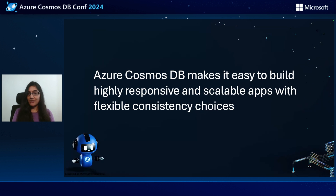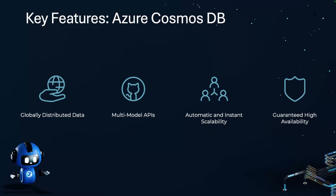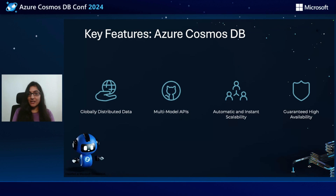Azure Cosmos DB makes it easy to build highly responsive and scalable apps with flexible consistency choices. Let's talk about some key features of Azure Cosmos DB. It's globally distributed, enabling you to replicate your data across multiple Azure regions worldwide, and ensures low-latency data access for users. Then you have multimodal APIs — Azure Cosmos DB supports multiple data models like document data, key-value pairs, graph data, columnar data, all within the same Azure Cosmos DB account. You also get automatic and instant scalability, with virtually unlimited and elastically scalable throughput across any number of Azure regions with no application downtime, plus guaranteed high availability in the event of regional outages.